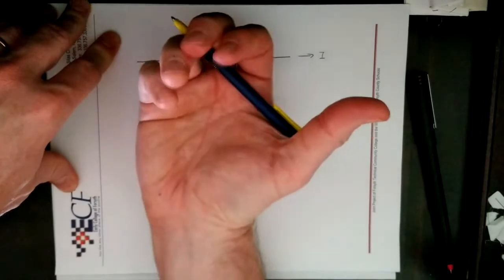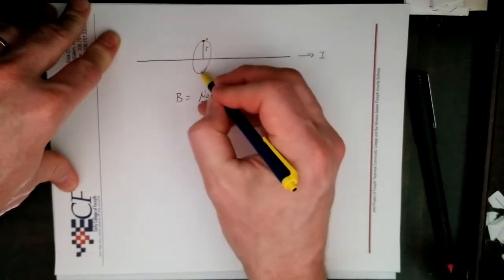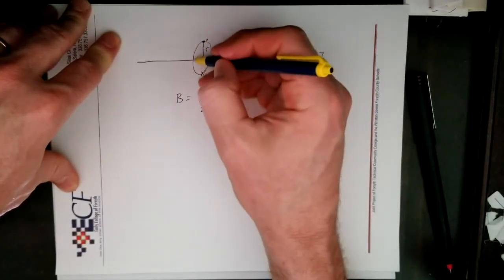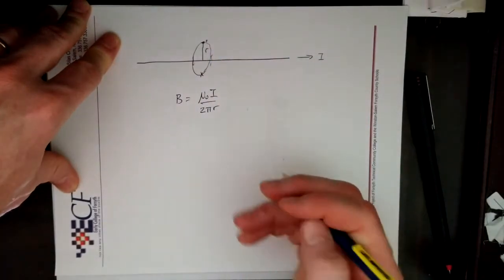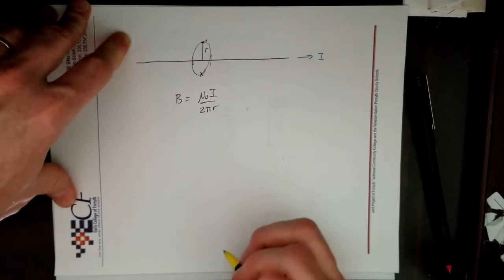The direction depends on where you are and it's going to be coming out of the page there, into the page there, going down in front and behind going up. Hopefully you can get that three-dimensional drawing there.